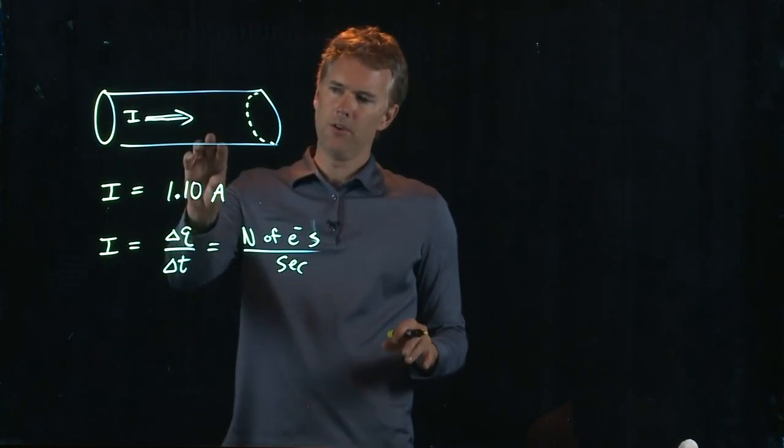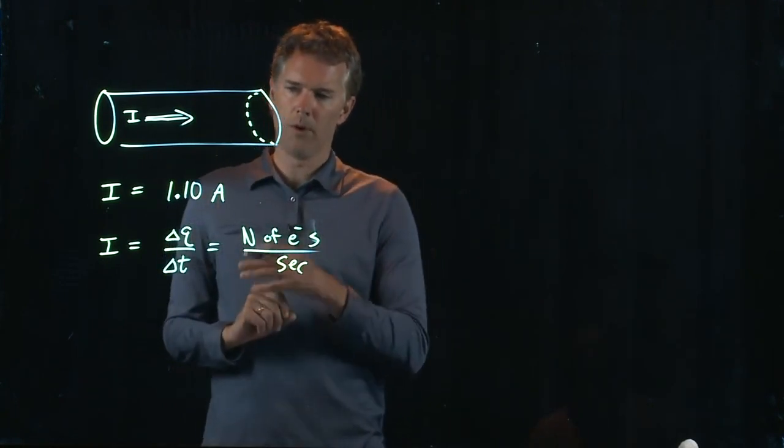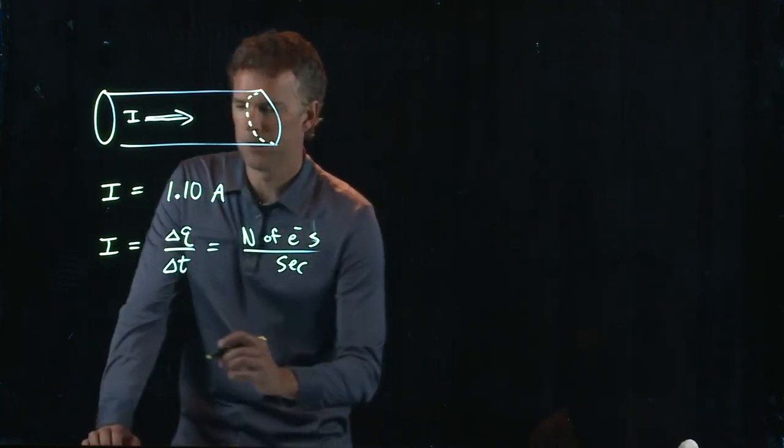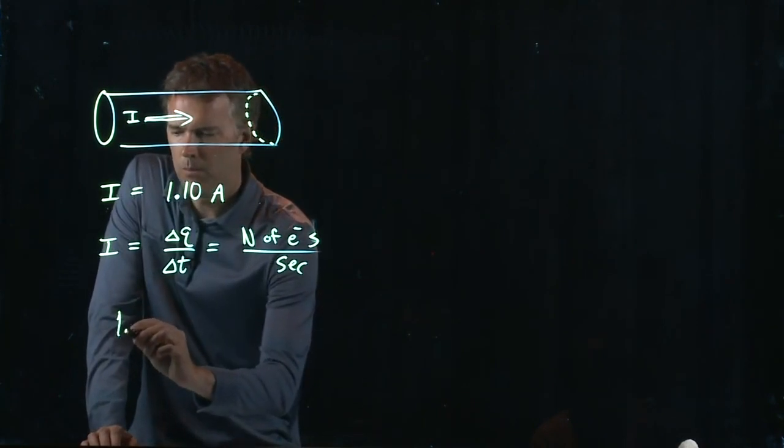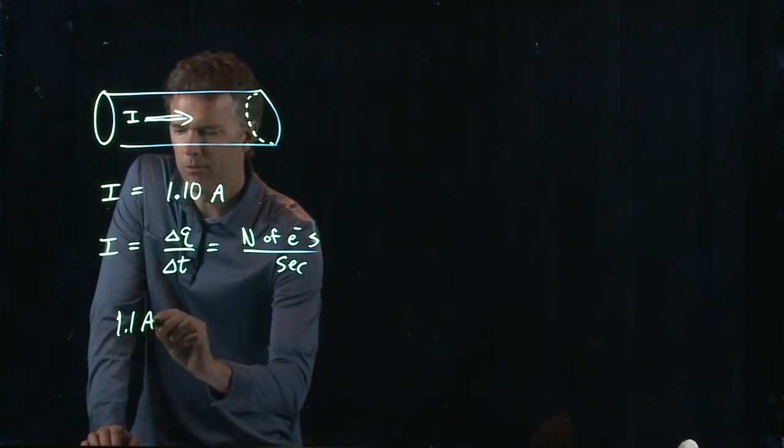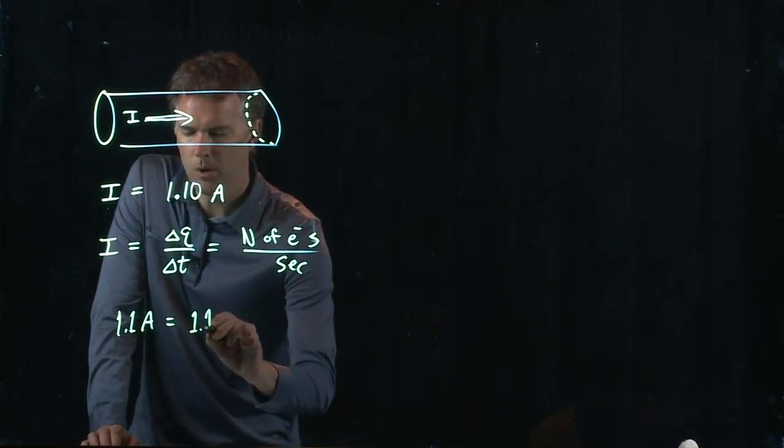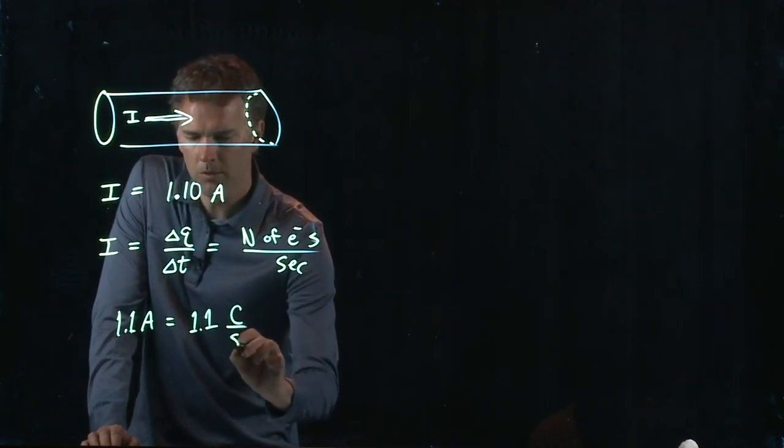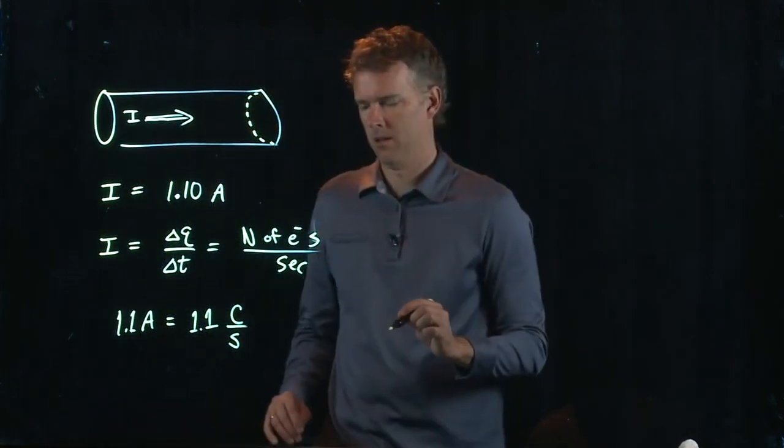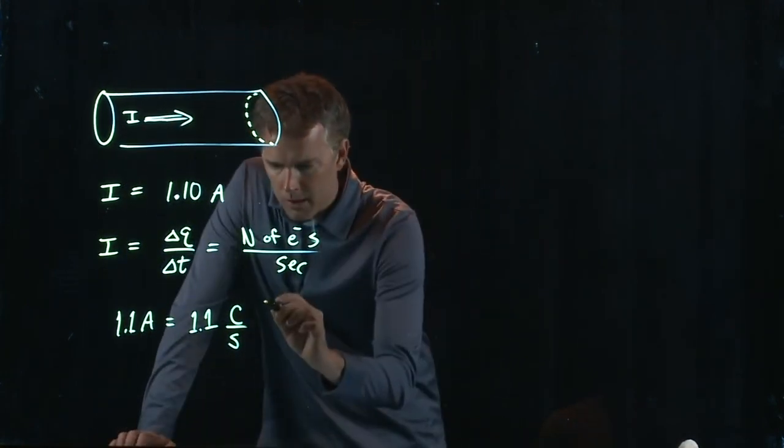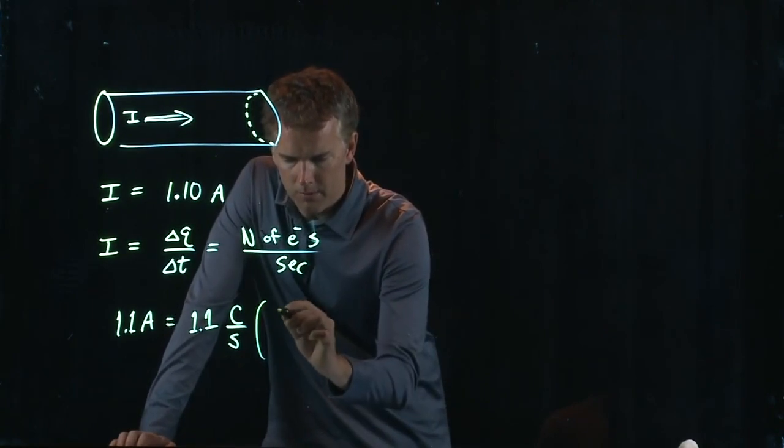So all we have to do is convert 1.1 amps to electrons. 1.1 amps is 1.1 Coulombs per second. And we just want to convert Coulombs to electrons.